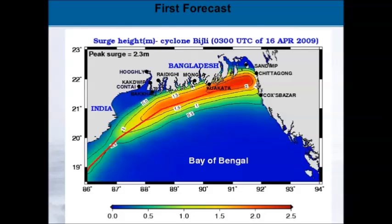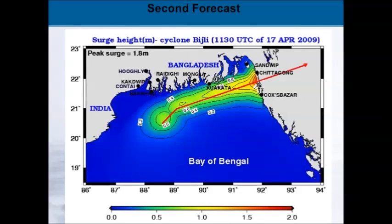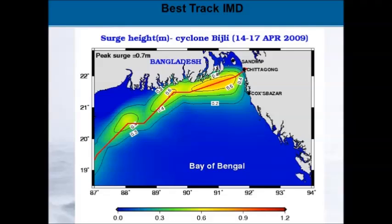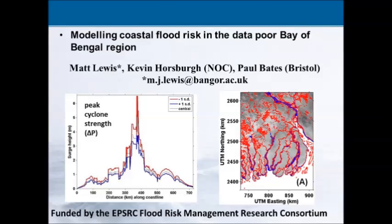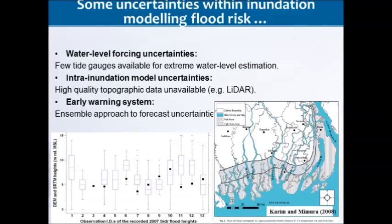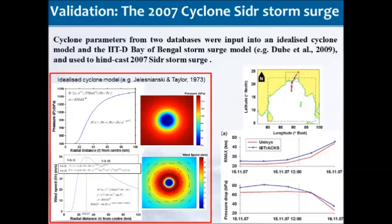Successive forecasts of cyclone Viyaru reveal very different forecasts, and when the best track is finally available you get a different forecast again. We need to take those uncertainties and convert them into something operationally useful. Work by my PhD student Matt Lewis looked at total uncertainties when forecasting inundation in Bangladesh — going from the surge model through to the inundation model. Perhaps the greatest uncertainty is the topography used for your inundation model, and Matt was trying to see whether the uncertainties in the inundation science were bigger or smaller than the uncertainties in the hurricane storm surge science.